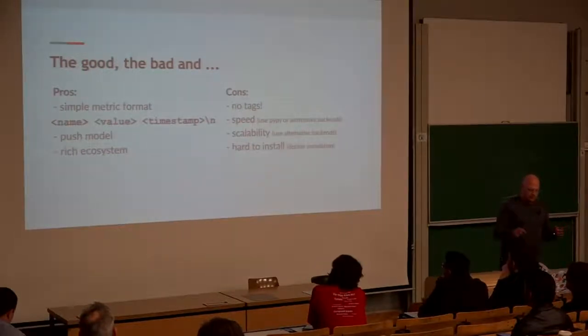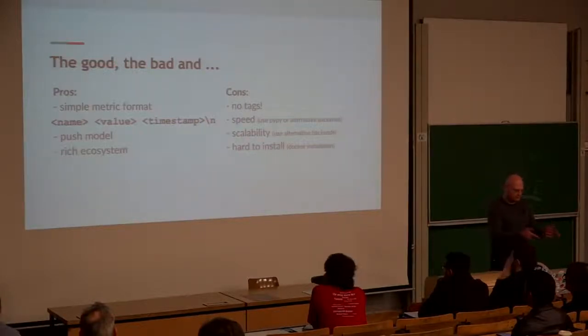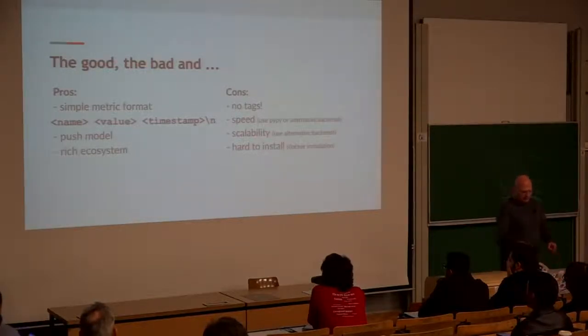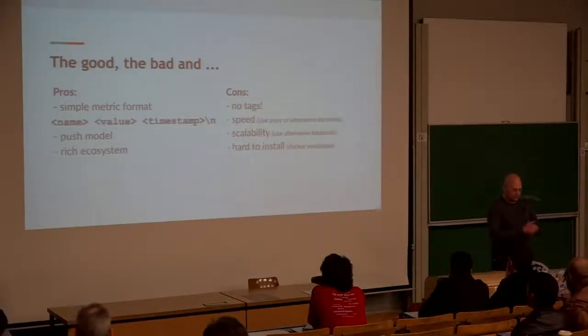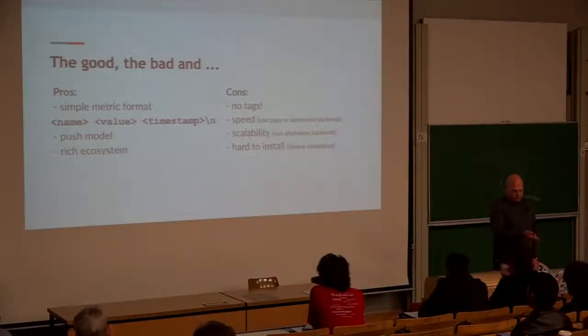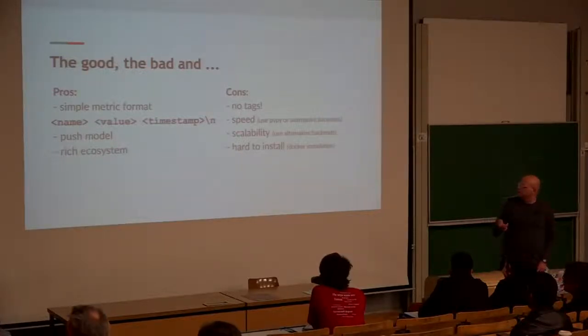Good and bad parts of Graphite - I can't talk about that for hours, but very short: good parts are the very simple mapping format: name, value, and timestamp, just space separated. Graphite is a push model system, contrary to Prometheus. And as I said, rich ecosystem. But it's also known that Graphite has problems - some problems are connected with speed, scalability, or operations. But you can solve it using alternative backend or broker, for example. But we had no tags.